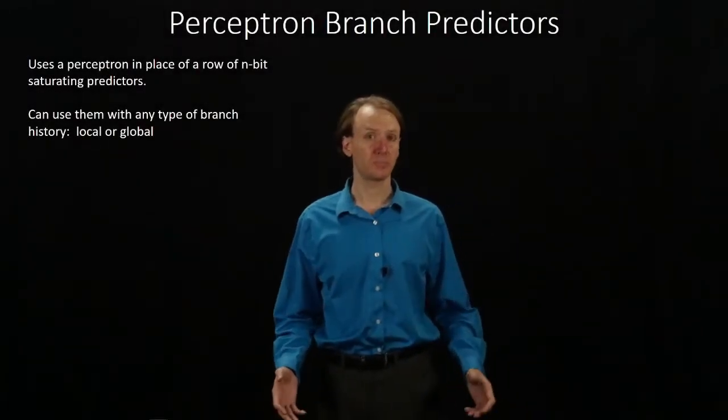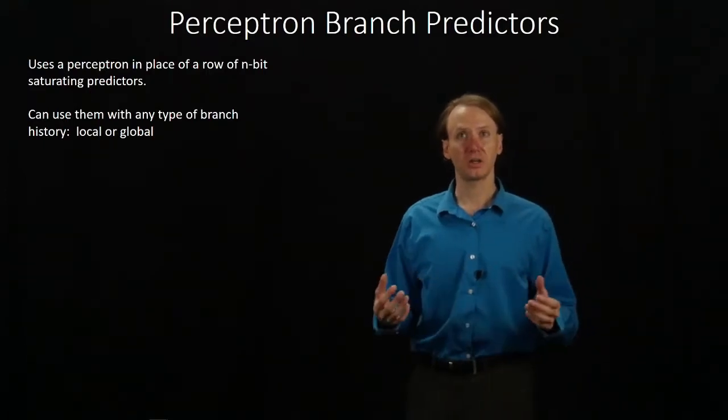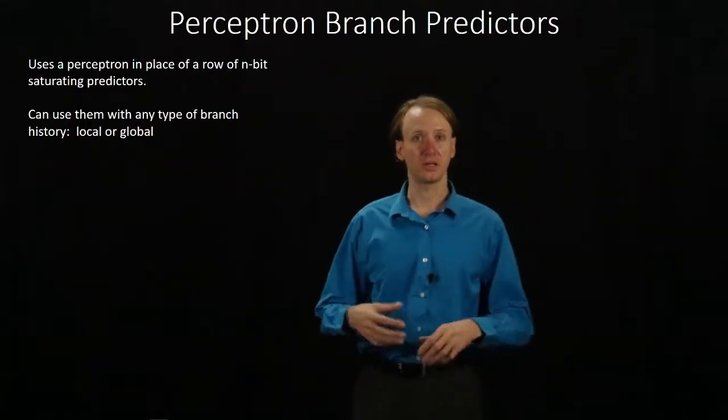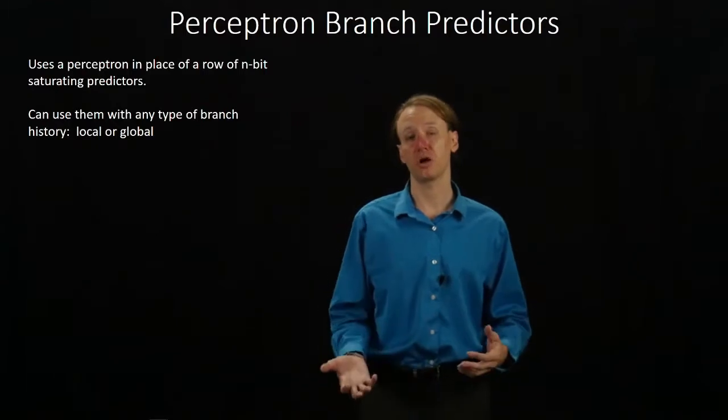This time, we're going to be looking at perceptron branch predictors. So far, we've looked at a series of saturating predictor algorithms which take a set of n-bit saturating predictors and use those to decide whether we should take a branch or not.